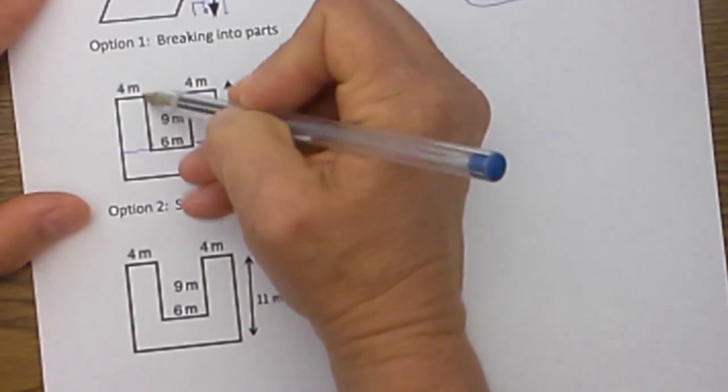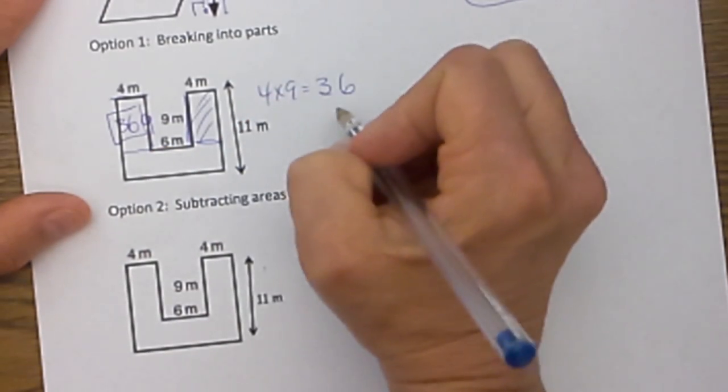This height right here is 9 meters, and this length is 4, so that area is 36, because 4 times 9 is 36. Then I've got this other side that's the exact same, so I'm going to add another 36. So far I've got 72 square meters.